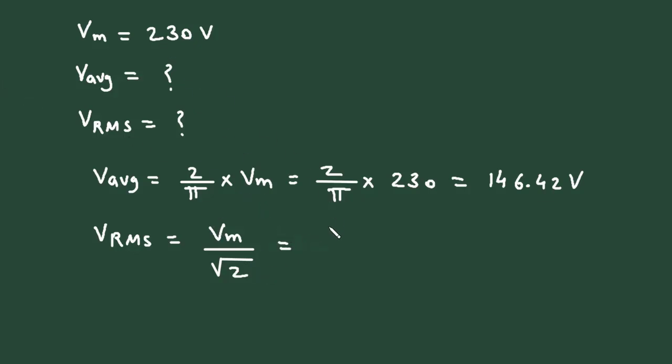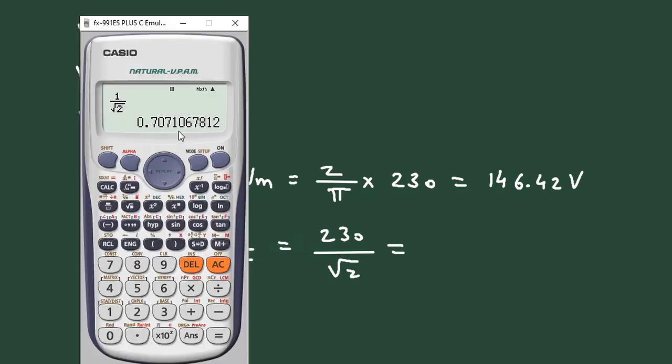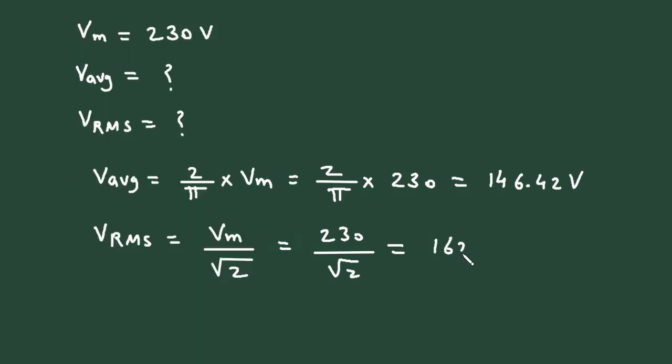So Vm value is 230 divided by root 2. Also remember that 1 upon root 2 is equal to 0.707. So here this is 230 divided by root 2, which equals 162.63 volts. So this is the value of VRMS.